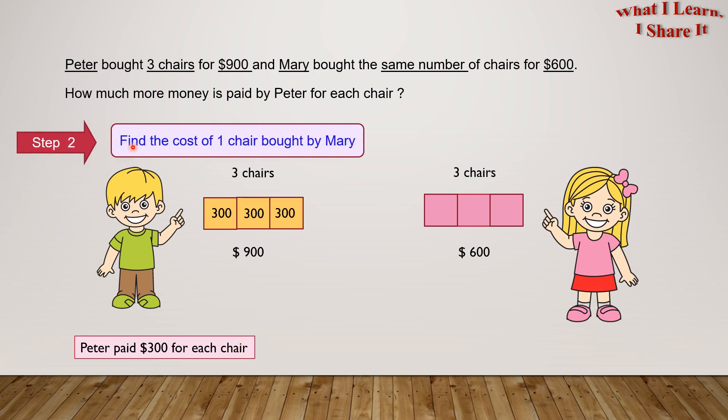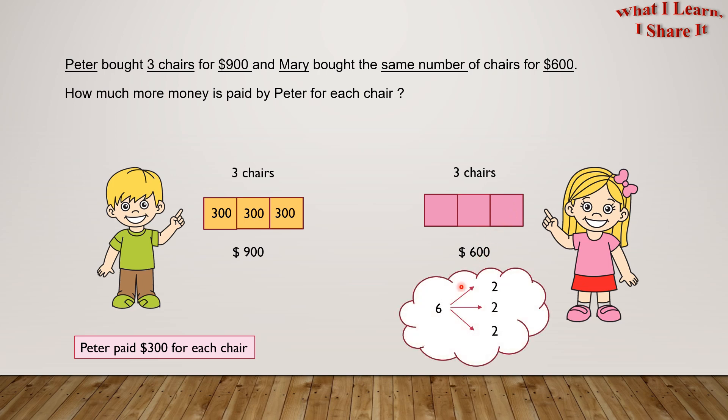Step 2. Find the cost of one chair bought by Mary. So Mary paid $600 for three chairs. Now we have to divide $600 into three equal parts. We know that if we have to divide $600 into three equal parts, then each part will be $200.